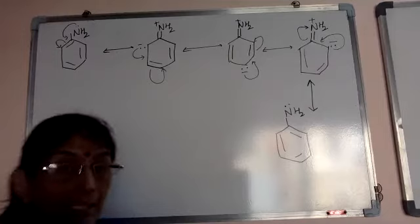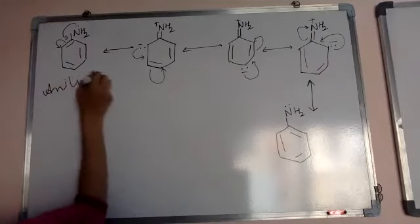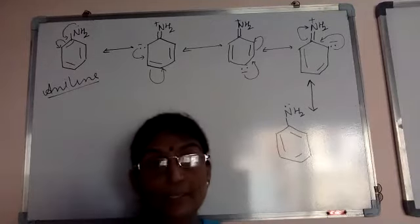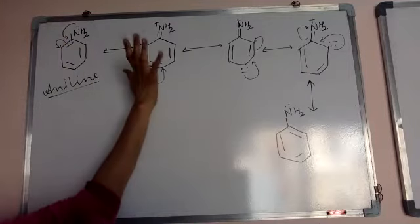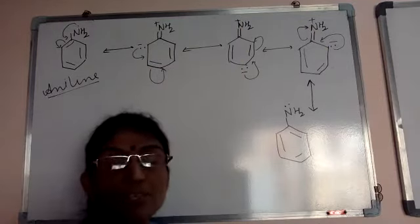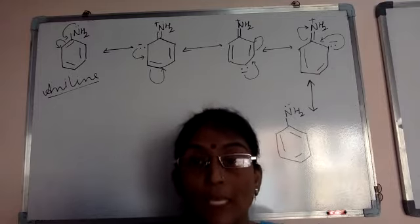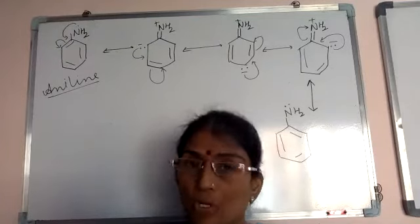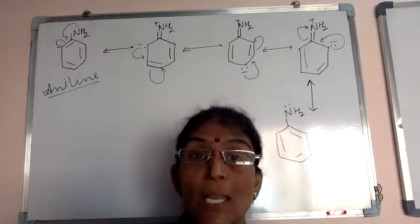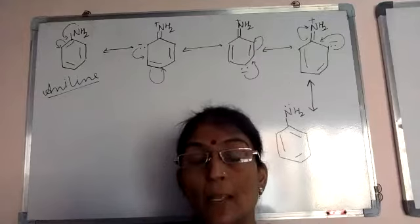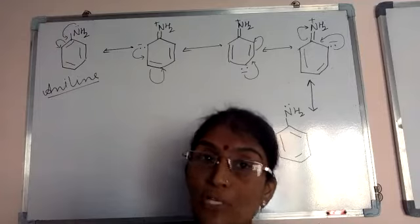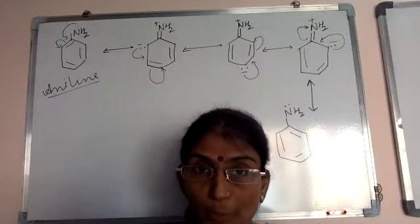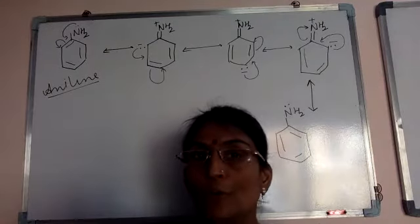In the resonating structures of aniline we can see that electron density on nitrogen decreases. Yaha se electron pair ring mein shift due to resonance on nitrogen pe kaun sa charge dikha hai, positive charge. So if there is positive charge on nitrogen atom then how it can be a base? When electron pair is not present on nitrogen how it could be a base, basic character of aniline is less compared to alkyl amines.